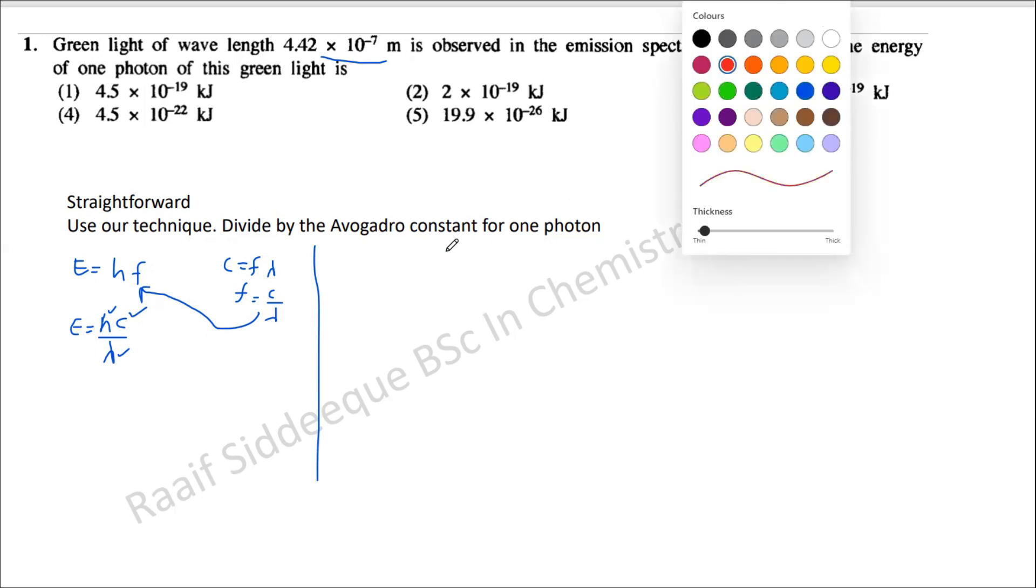If not, in cases if you remember about our method, we discussed this in many cases. Energy of a mole, energy of a mole of photon is equal to our constant which is 1.2 into 10 to the power of 5 if you can remember that.